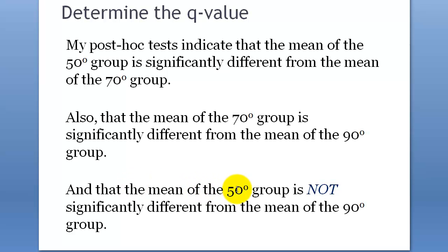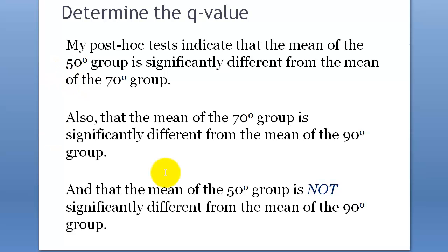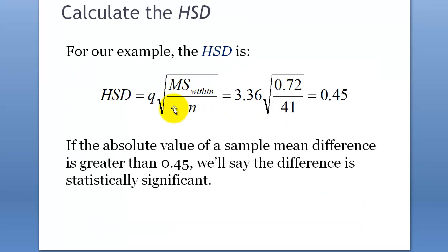So the post-hoc tests indicate that the mean of the 50-degree group is significantly different from the mean of the 70-degree group, the mean of the 70-degree group is significantly different from the mean of the 90-degree group, but the mean of the 50-degree group is not significantly different from the mean of the 90-degree group. In the next video, we'll talk about where the HSD formula comes from and get a better understanding of the whole thing.